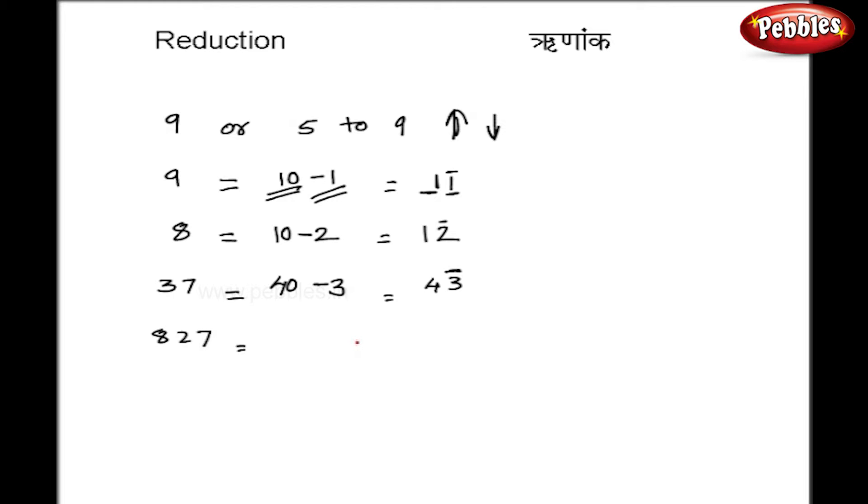Let us take 827. So in this case I can write 8, 2 and 7. Now let us see how to reduce it. Now about this 7, I can write 1 minus 3. Number 2 is already a lower number which need not to be changed, so I write as it is. Now 8 I can write as 1 minus 2.